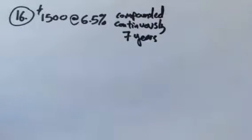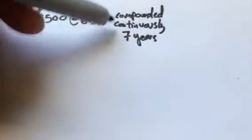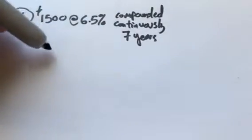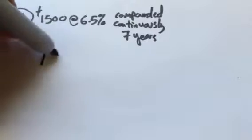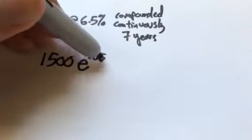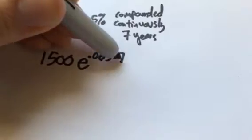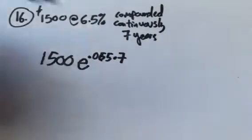This is Math 141 Practice Test 2, problem number 16. Here's our investment, and we're finding how much it will be worth after the amount of time. This is continual compounding, so it's the PERT formula. We start with that much money, continuously compounding, and that's going to be to the power of the rate multiplied by how many years it's at that rate.